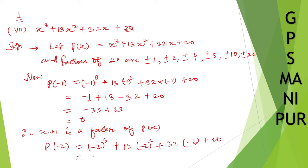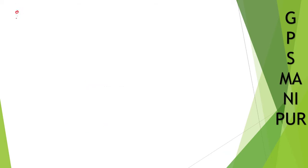Minus 2 cubed is minus 8. 13 into 4 is 52. 32 into 2 is 64, with minus. So minus 8 minus 64 is minus 72, and 52 plus 20 is 72. So minus 72 plus 72 is 0. Therefore, x plus 2 is also a factor of p of x.